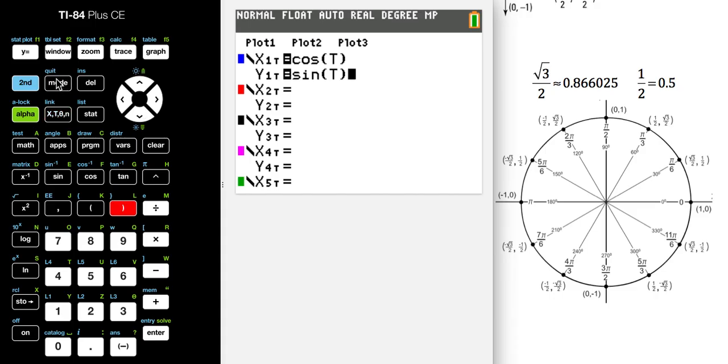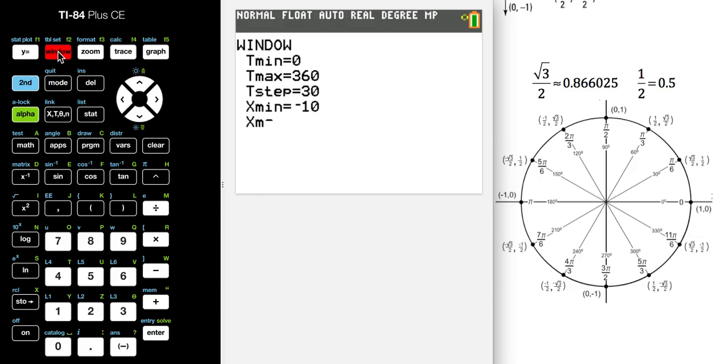Now we're going to want it to display correctly in our window, so let's make some changes to our window settings. We're going to start at 0, and that 360 is good for T max because there's 360 degrees in the circle. For the T step, since I want 30, then 60, then 90, then 120, I've got to count by 30s.